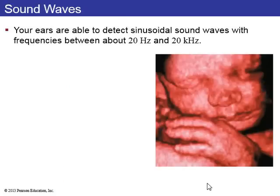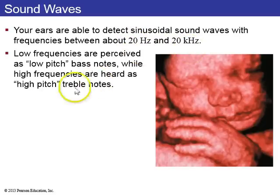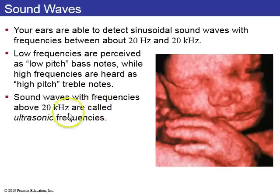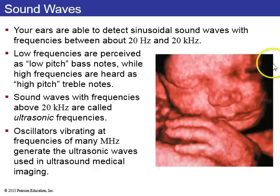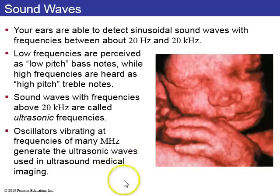Your ears are able to detect sound waves with frequencies between 20 hertz and 20 kilohertz. Low frequencies are perceived as low bass notes, and higher frequencies are heard as high pitch treble notes. If you go above 20,000 hertz, you can't hear it anymore — that's called ultrasound. Ultrasound can be used to image things inside solids, like inside a human body. Ultrasonic medical imaging works by receiving reflected sound waves inside a human body.